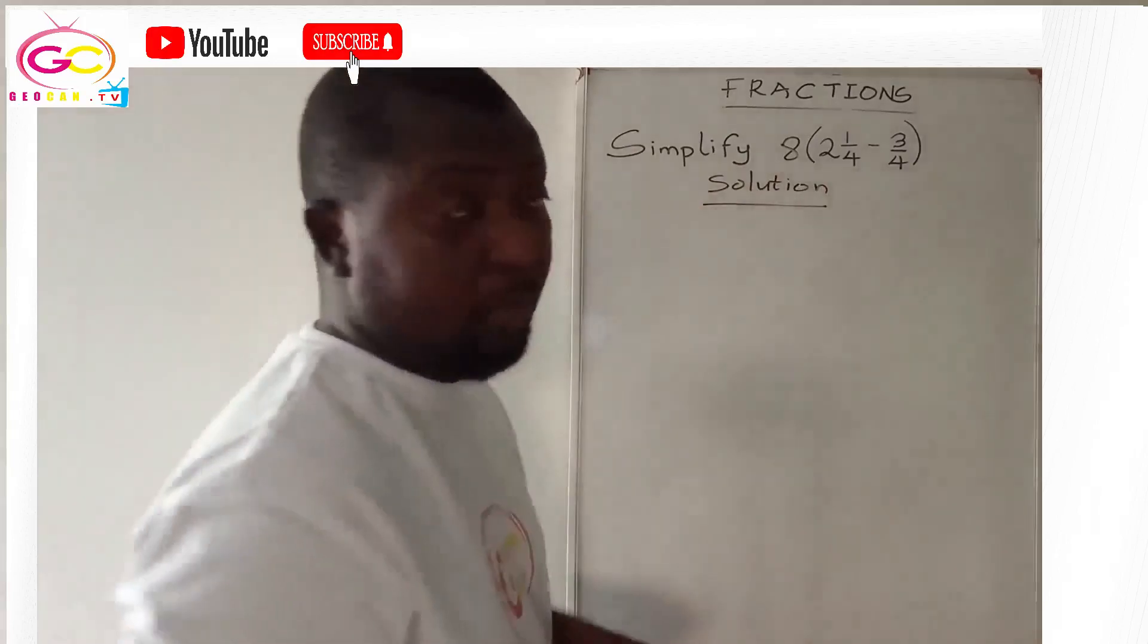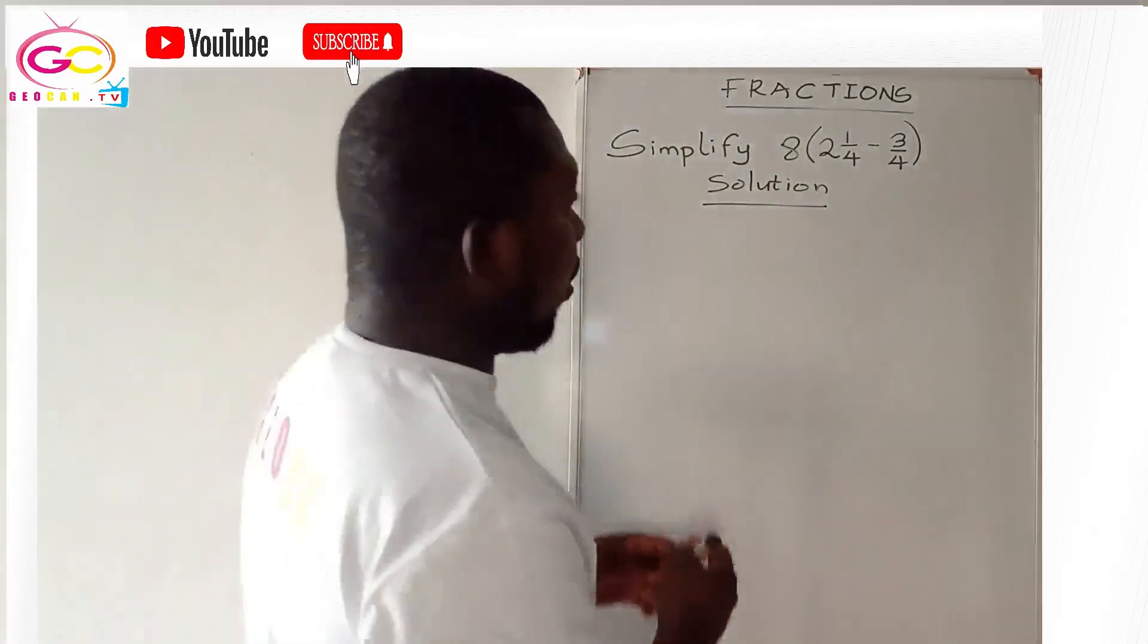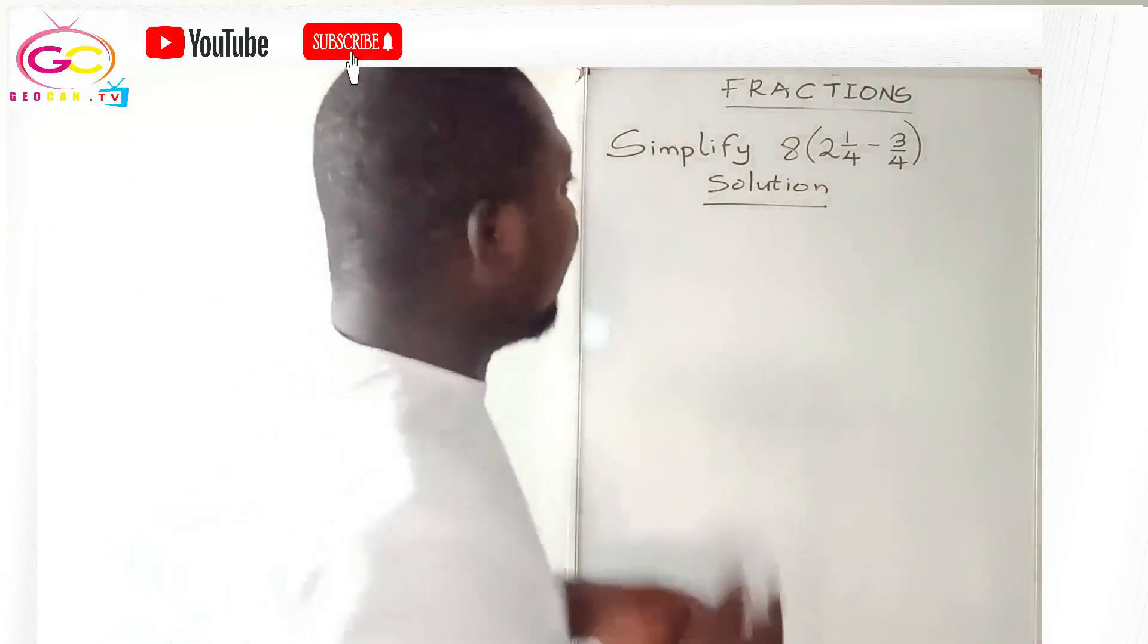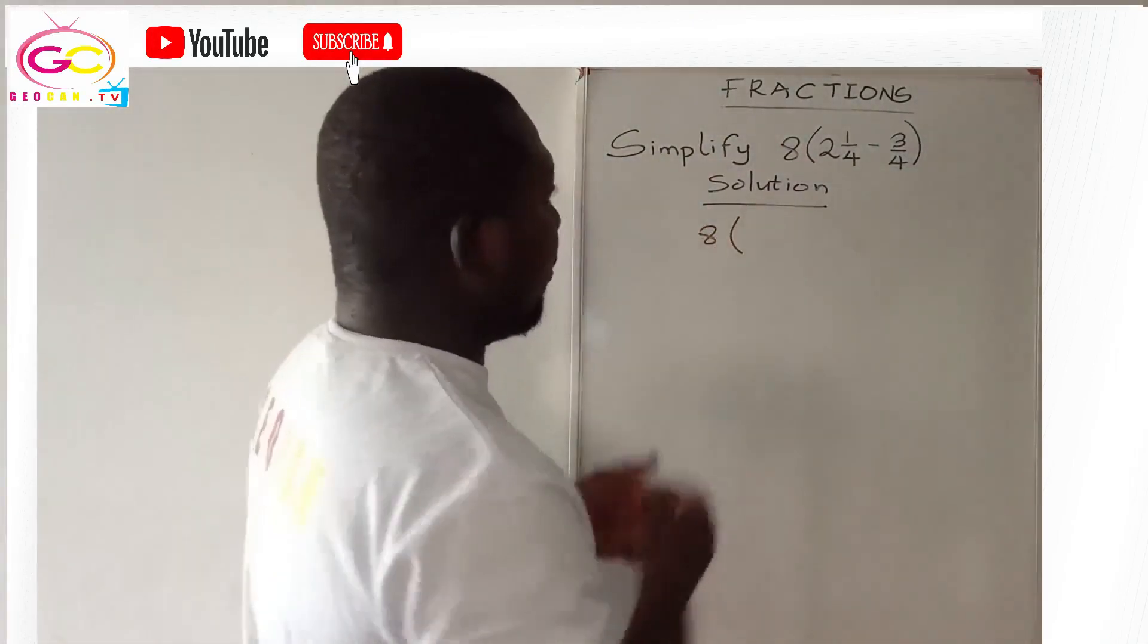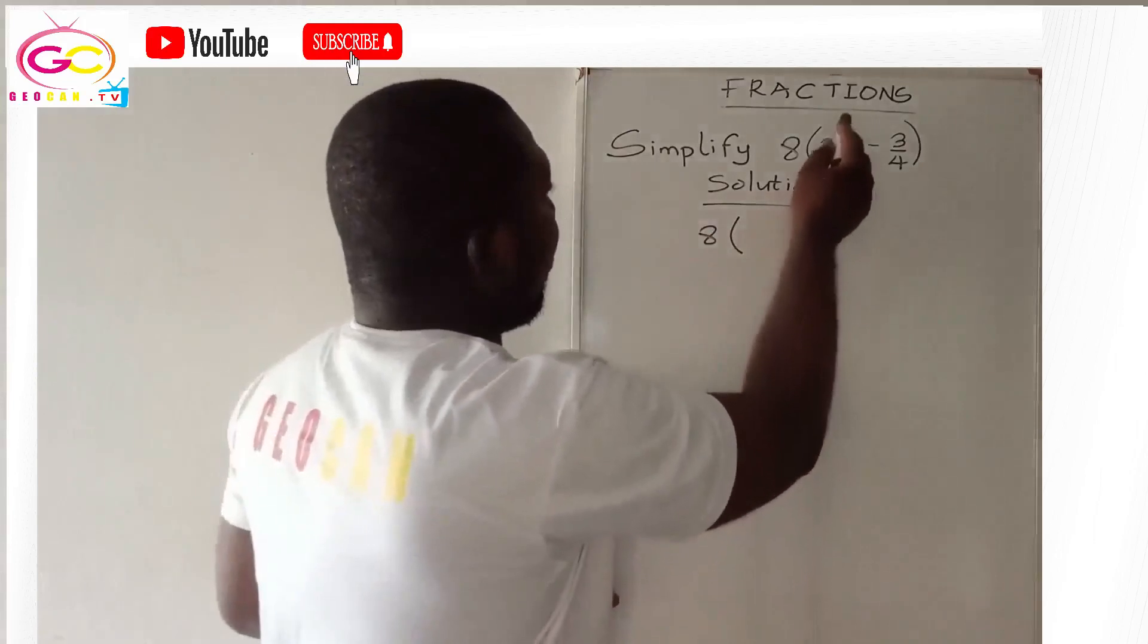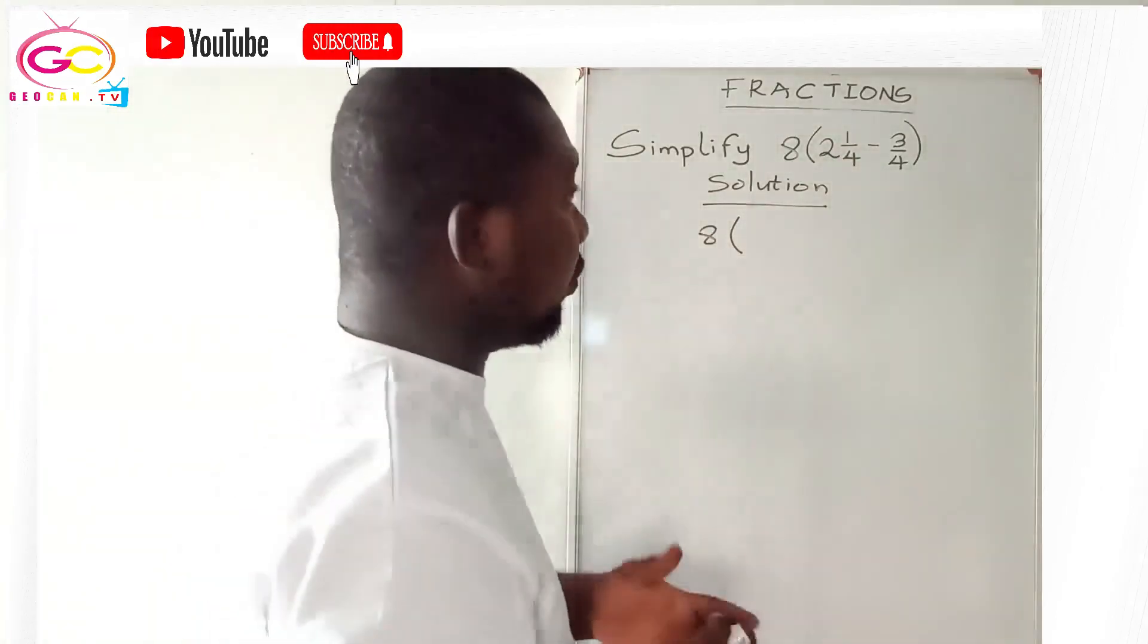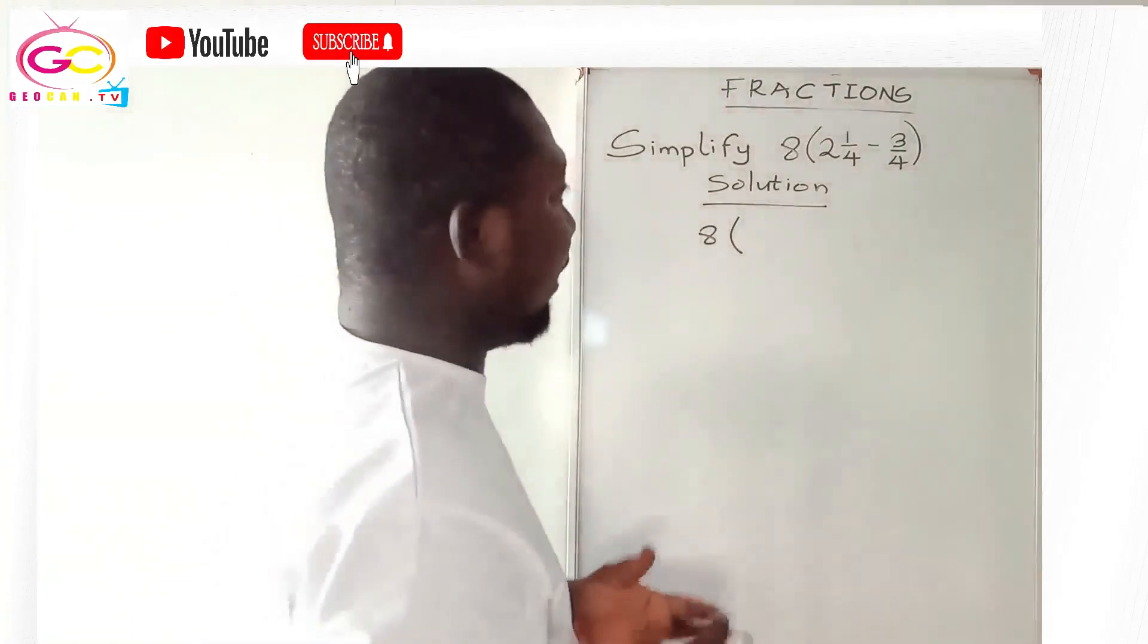Now in tackling these questions, always solve the ones in bracket first. Okay, so we have our 8 into bracket. Now 2 whole number 1/4 you have to convert it into an improper fraction.